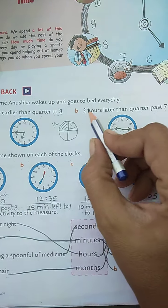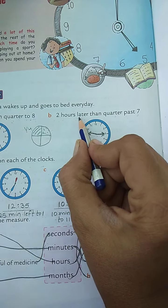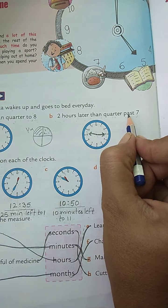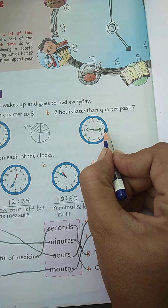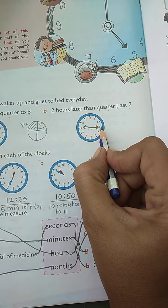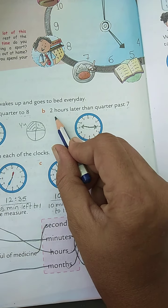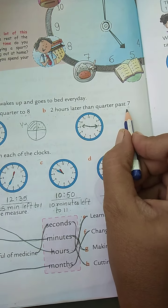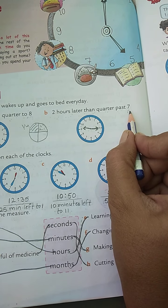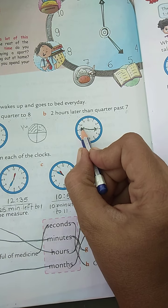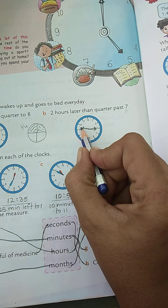Same way, now number B: two hours later than quarter past seven. Quarter past means this side, I told you just now. So big hand will be on three, and small hand two hours later than seven. So seven plus two is nine. So after nine o'clock, nearby nine between nine to ten, you have to keep small hand but nearby nine.